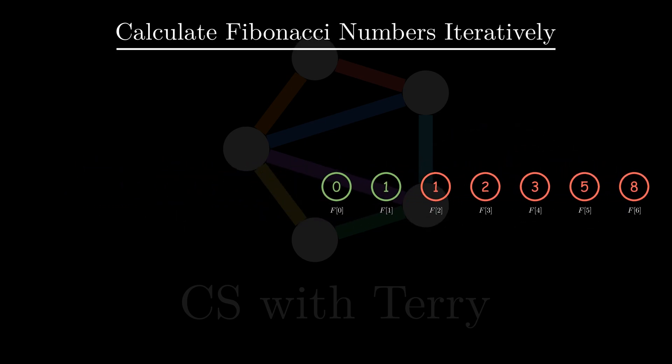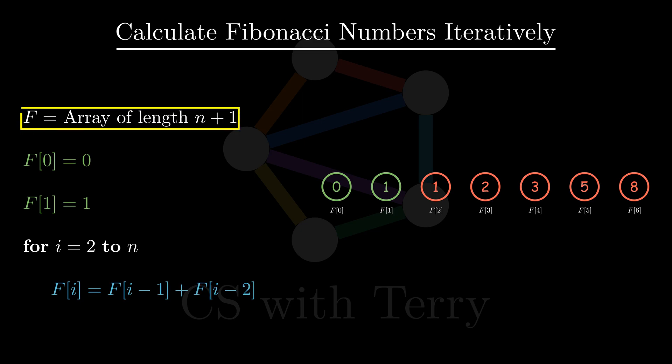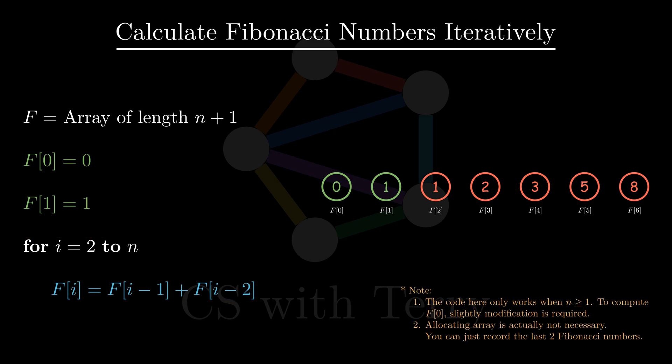Let's first look at how to calculate Fibonacci numbers iteratively. We create an array of length n plus 1. Let F0 equal 0 and F1 equal 1. Then let i iterate from 2 to n, and execute Fi equals Fi minus 1 plus Fi minus 2. When the loop ends, Fn is the nth term of the Fibonacci sequence.